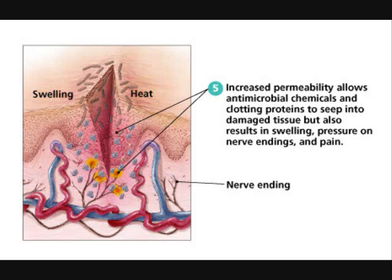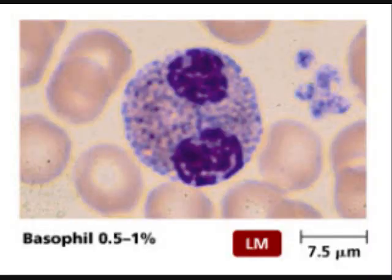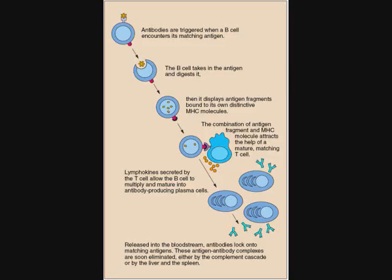Question two: differentiate between true and opportunistic pathogens. Opportunistic pathogens can only cause disease in someone who is already impaired. On page 385, table 13.4, you can see some instances in which host defenses are weakened, allowing opportunistic infections to develop.